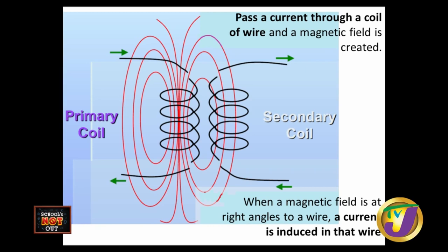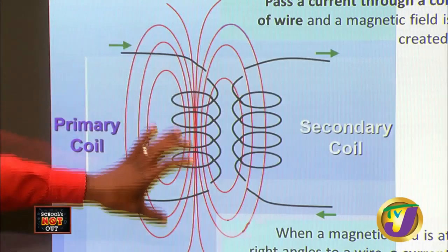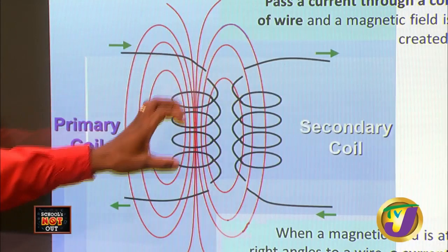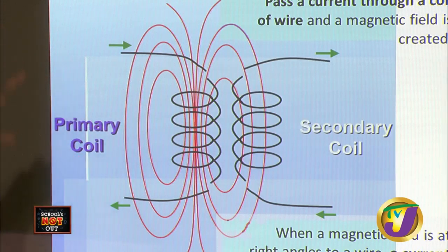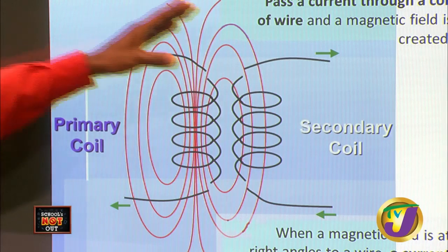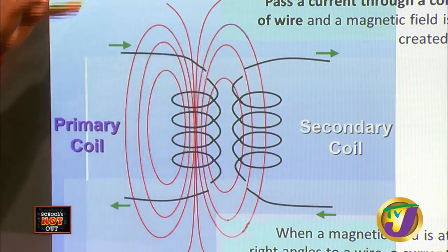We're not talking about Optimus and Decepticons — we're talking about the actual transformer that steps up and steps down voltage. We need to be familiar with the terminologies: primary coil, secondary coil, and how each coil works together to create an induced current from one to the other.